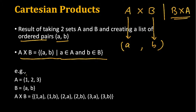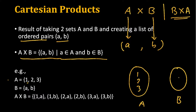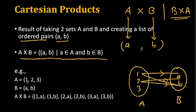For example, we have set A which is {1, 2, 3} — let's draw it — and another set B which has just two elements {a, b}. We take the first element from set A and pair it with both elements of B, so we get (1, a) and (1, b). Then we take 2 and pair it with both a and b, giving (2, a) and (2, b). Similarly for 3, we get (3, a) and (3, b).